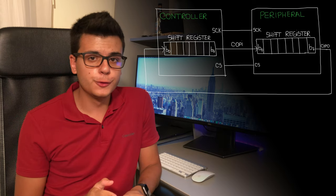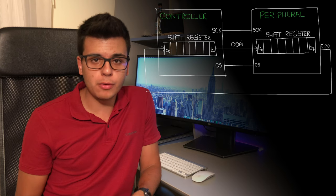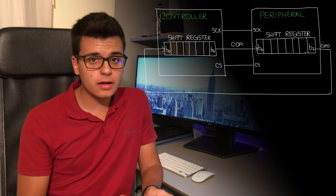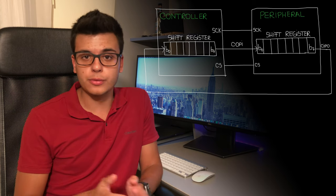SPI is always full duplex, meaning when a controller sends data to a peripheral, the peripheral sends data back at the same time — it works like a shift register. When a controller asks a peripheral to do something and expects data back, it can wait a bit after the first transfer for the peripheral to gather results, then generate clock signals so the peripheral can send that data back. Since the controller generates the clock, it needs to know how long the peripheral takes to gather the data.